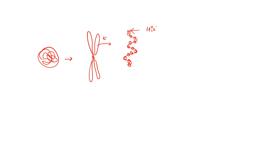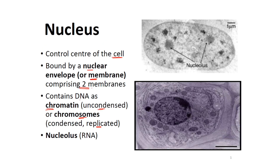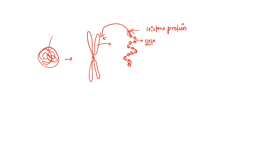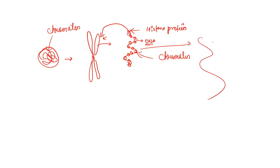The bead-like structure is histone protein, and the thread-like structure you see is your DNA. When it is compact, it forms the chromosome. So we call DNA in its uncondensed form chromatin, and when we see DNA in its condensed form, we call it a chromosome.